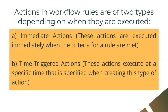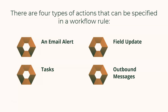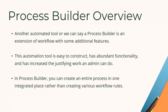Workflow is mostly outdated nowadays, but knowing how workflow rules work and what actions they support can still be helpful. There are four types of actions that can be specified in a workflow rule: email alert, task, field update, and outbound messages.